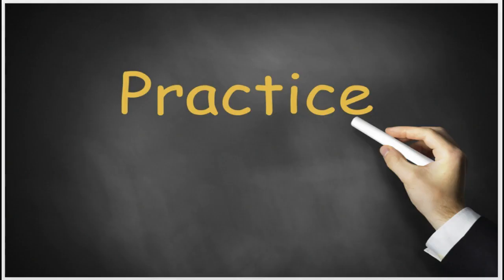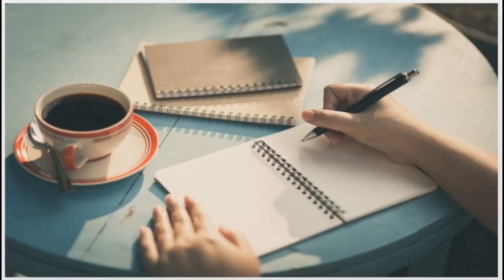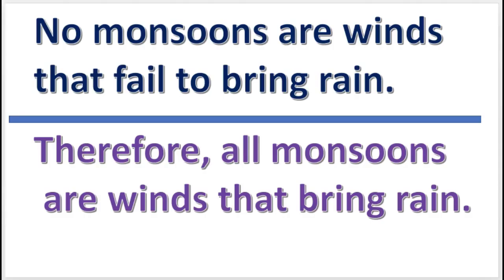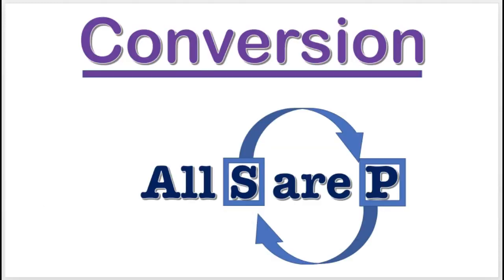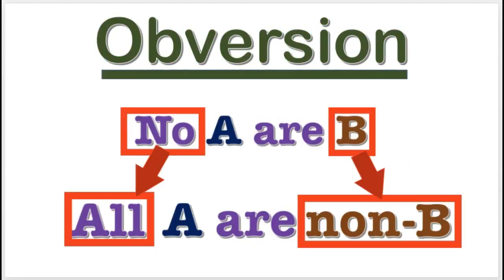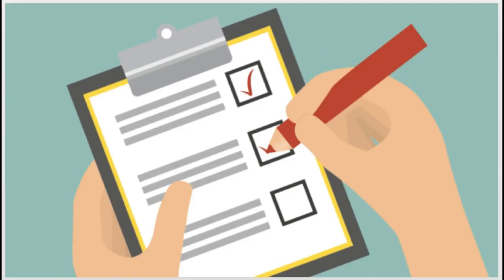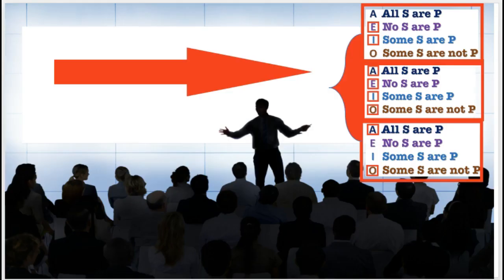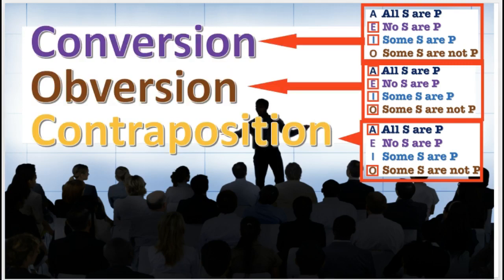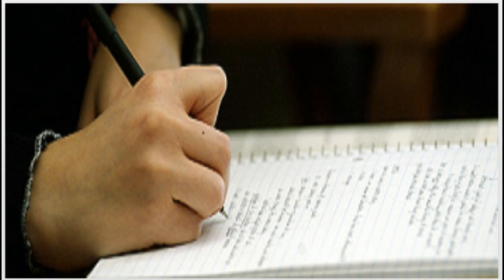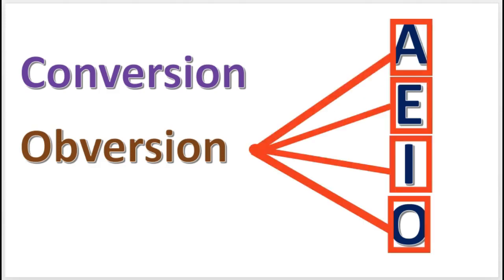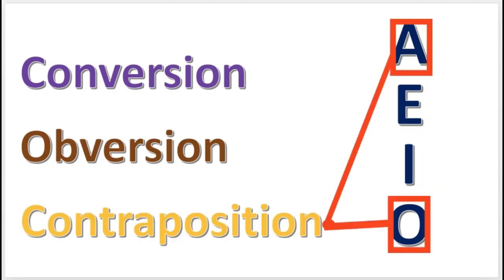We are now going to do some practice problems. You'll be looking at the inferences and determining what operation was used to produce the conclusion — whether it was conversion, obversion, or contraposition. You will check to see if it was done correctly, and see if it has logically equivalent results. You need to remember the logical equivalent results for all of the operations, or you can have a note: conversion — E and I; obversion — all; and contraposition — A and O.